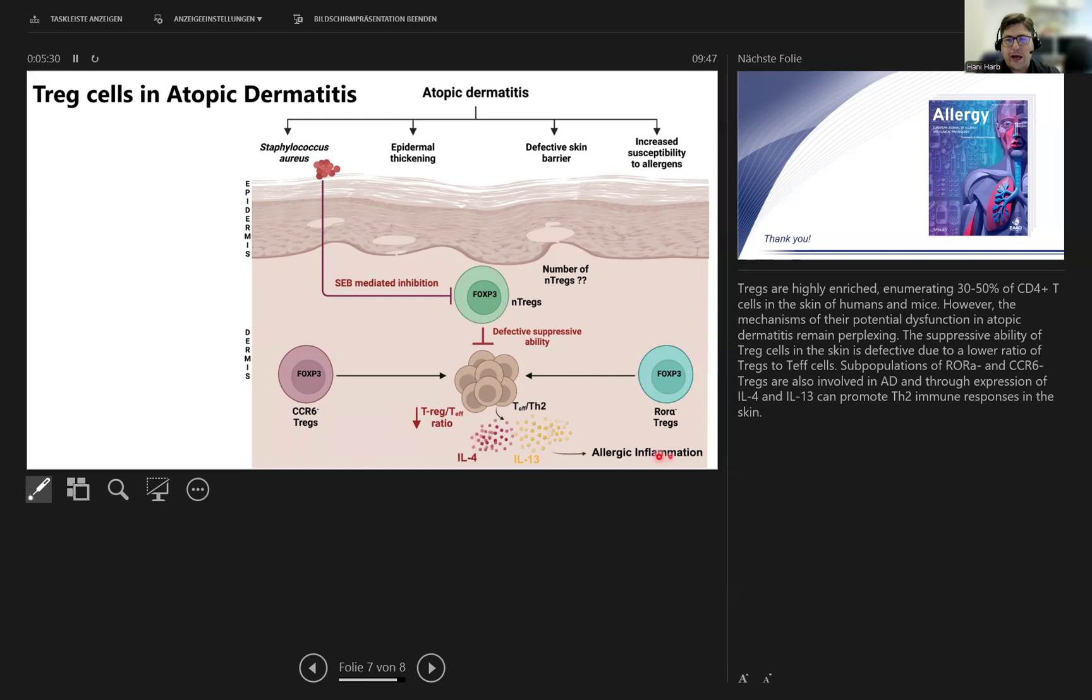Subpopulations of ROR-alpha negative T-reg cells or CCR-6 minus T-reg cells are involved in atopic dermatitis through expression of both IL-4 and IL-13, which can promote TH2 responses in the skin.